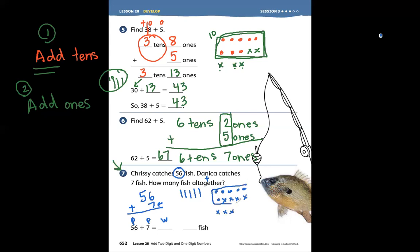Now we add up all of our tens together. 10, 20, 30, 40, 50. Keep going. 60, 61, 62, 63. There are 63 fish all together.